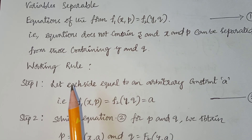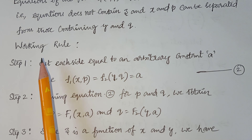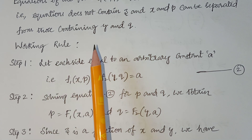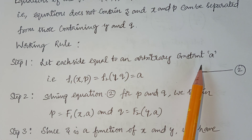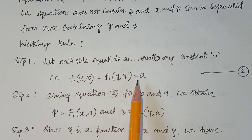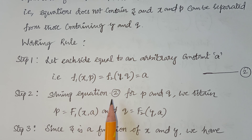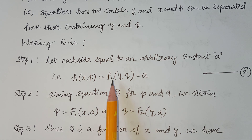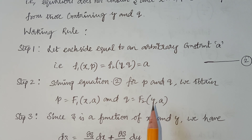The working rule to solve this: once the equation is separated, let each side equal an arbitrary constant. So f1(x, p) = f2(y, q) = a. Now solving this equation for p and q: p = f1(x, a), some function of x and a; q = f2(y, a), some function of y and a.